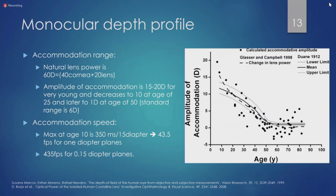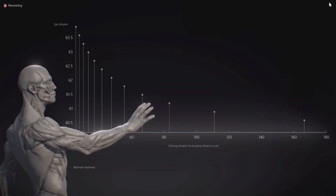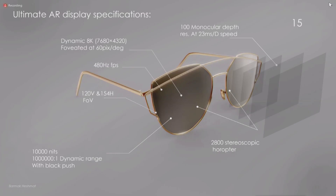Accommodation shows how well our crystalline lens varies in diopter as we age — and as we age, our diopter range drops significantly. If you do simulations, you can see depth resolutions becoming really, really sparse as distance increases. And if you do the calculation, here are the ultimate specifications that would saturate human perception for an augmented reality headset.